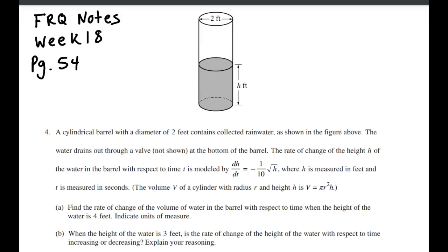Alright guys, welcome to our Keynote Week 18, page 54 of the Blue Book. We're going to be doing part A and B, and then we'll do another one after this. Go ahead and read it. We're dealing with a cylindrical barrel with a diameter of 2 feet across. Apparently it's being filled with rainwater. The water drains out through a valve at the bottom of the barrel. The rate of change of the height of water in the barrel with respect to time is given by this formula here.